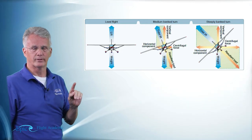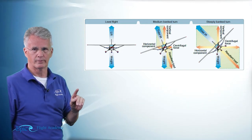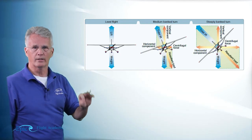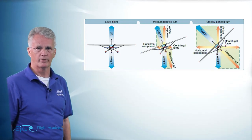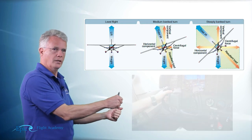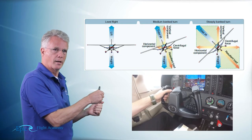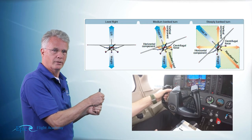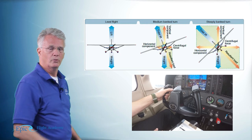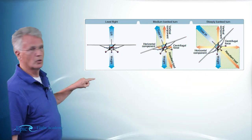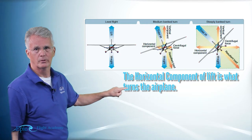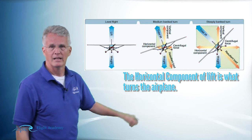But remember, we wanted a level turn. So here comes my third and final primary flight control. I have got to increase back pressure on the elevators to create this horizontal component of lift.